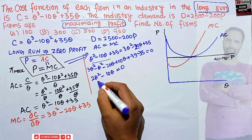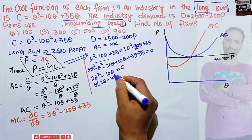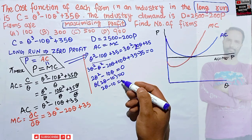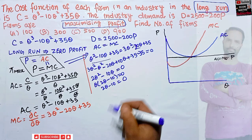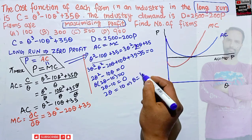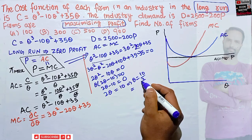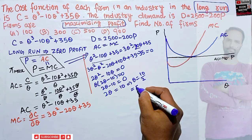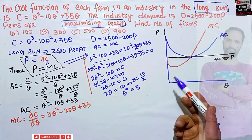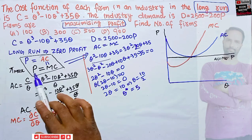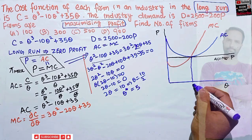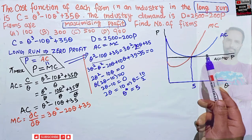We can take q as a common factor: q(2q - 10) = 0, which implies 2q - 10 = 0 (since q ≠ 0). Therefore q = 10/2 = 5. So the equilibrium or optimal quantity that the individual firm will produce in perfect competition, while maximizing profit and earning zero economic profit, is q = 5.